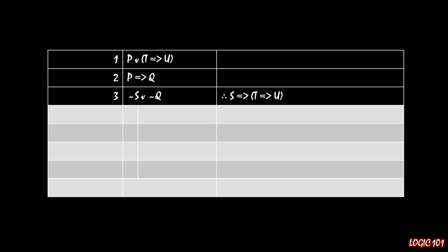So we're going to begin our conditional proof by assuming that S is true. So line four, S, and the justification for this is that we have an assumption for a conditional proof.